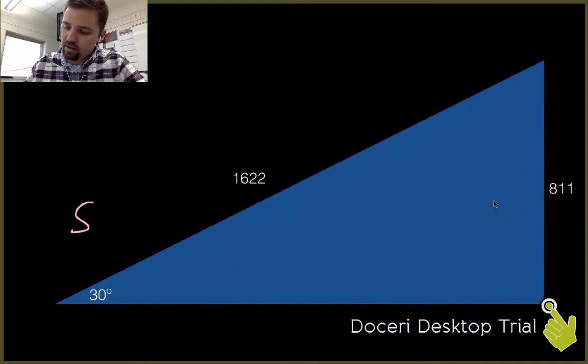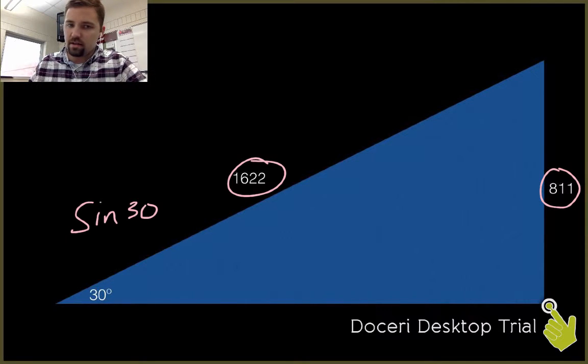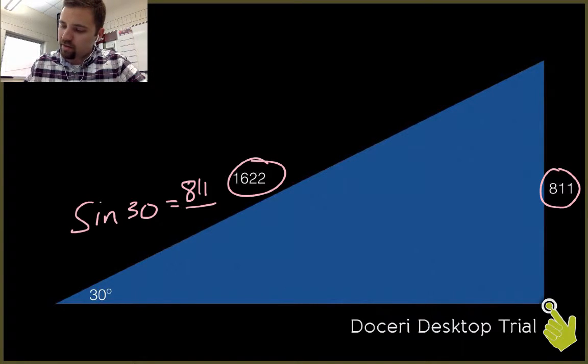Once again, we're going to take the sine of 30. That's the opposite over the hypotenuse. All right, and so that's going to be 811 divided by 1622, and you guessed it, that simplifies to be a half.